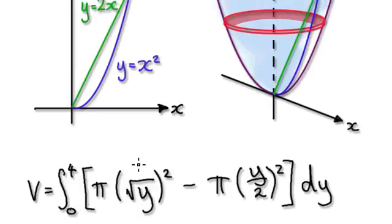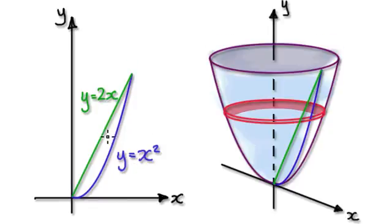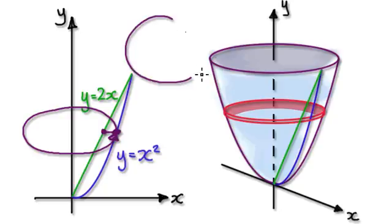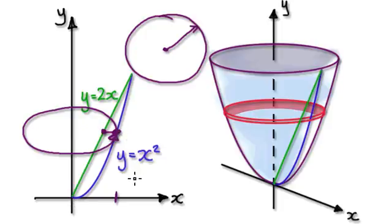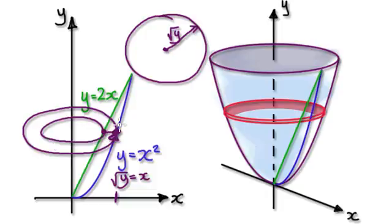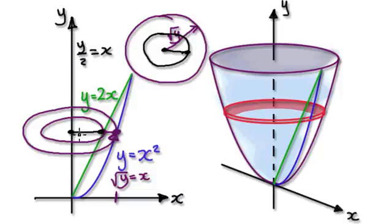Looking at this particular slice, when you rotate it 360, it gives you a big circle. The radius of this big circle will be the x distance, which is the square root of y — since y equals x squared, taking the square root gives x equals root y. When you rotate the green line, that gives the small circle. The radius of the small circle: from y equals 2x, dividing both sides by 2 gives x equals y over 2. So the radius of the small circle is y over 2.